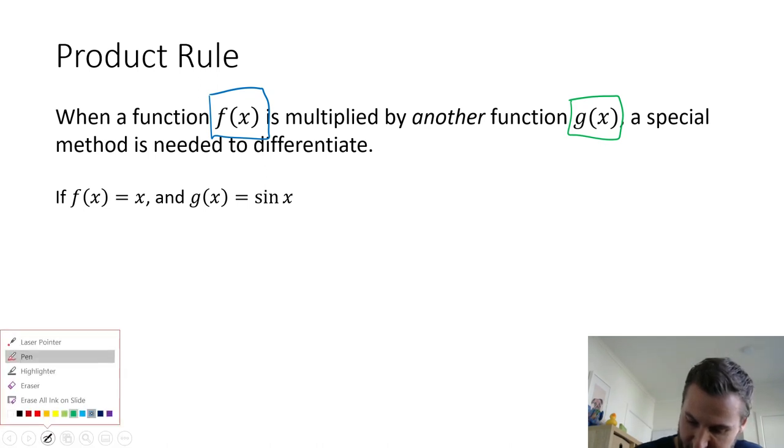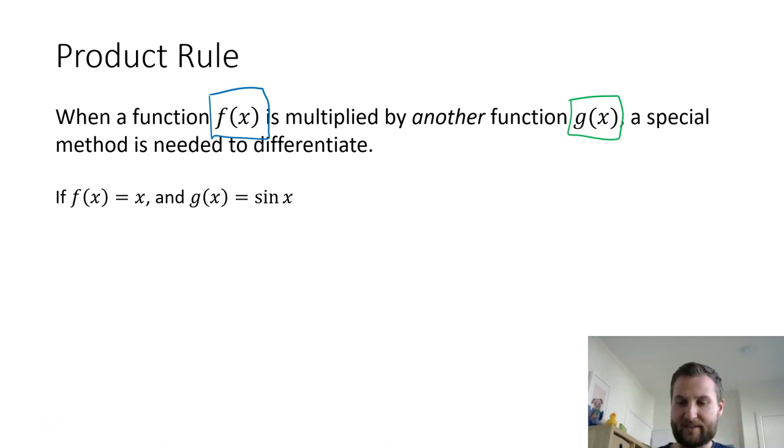I've got one set up for us here. If f(x) equals x and g(x) equals sin x, then multiplied together, f(x) times g(x), we just take the functions and multiply them together. So x times sin x.